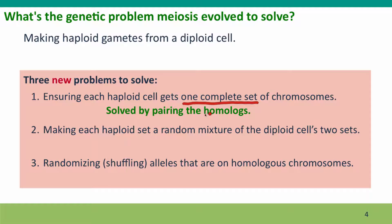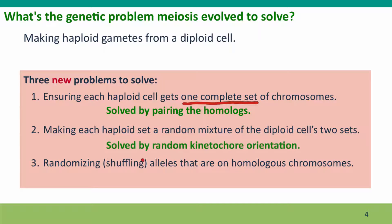The first problem is solved by pairing the homologs. In a way, meiosis uses the same strategy mitosis did, but it has to do something special first. The second problem is solved by the random way in which the kinetochores point in the cell, so you can't predict which chromosome is going to get pulled to which pole of the cell. And the third problem is solved by a process called crossing over, which we'll talk about in Lecture 7.